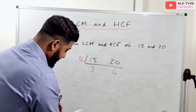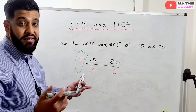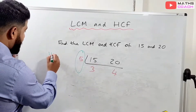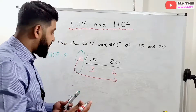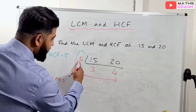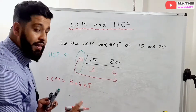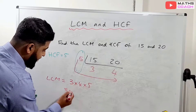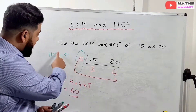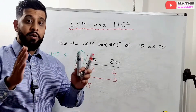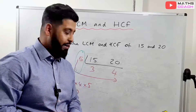To find the HCF, the beauty of this technique is that you simply multiply the numbers on the side — in this case just 5. So HCF equals 5. For the LCM, you multiply all the numbers in an L-shape: the side numbers and the bottom row. So it's 3 times 4 times 5. 4 times 5 is 20, and 20 times 3 is 60. So the LCM of 15 and 20 is 60. One method, and you get both answers.